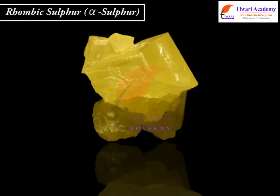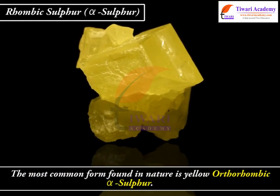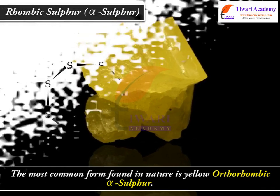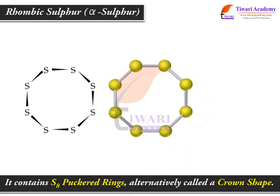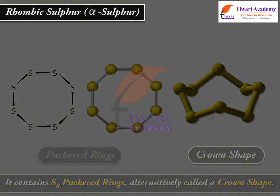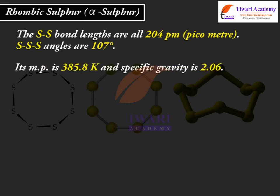Rhombic Sulphur — Alpha Sulphur. The most common form found in nature is yellow orthorhombic alpha sulphur. It contains S8 puckered rings, alternatively called a crown shape. The S-S bond lengths are all 204 pm. S-S-S angles are 107 degrees. Its melting point is 385.8 K and specific gravity is 2.06.